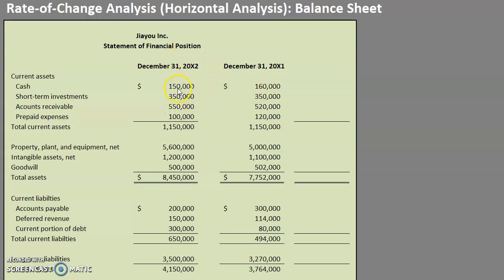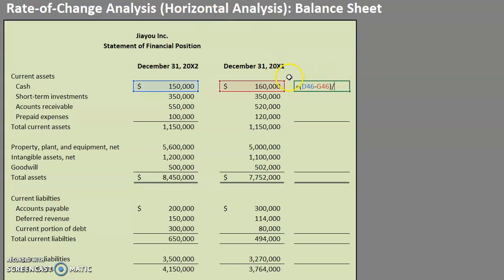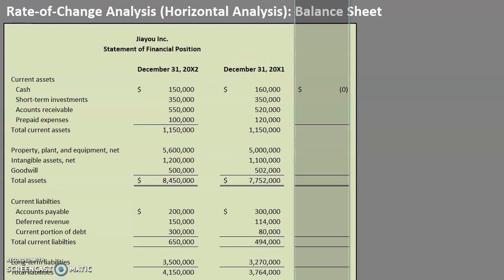For example, for cash we can see that it decreased. When we're doing a horizontal analysis the first focus is on finding the amount of the increase or decrease. In our case we already said it was a ten thousand dollar decrease. The formula is: current year minus prior year — that gives us negative ten thousand — and then we divide that amount by our base year. That will tell us what percentage increase or decrease we have. Dividing by our base year and turning that into a percentage gives us a 6.25% decrease in cash.